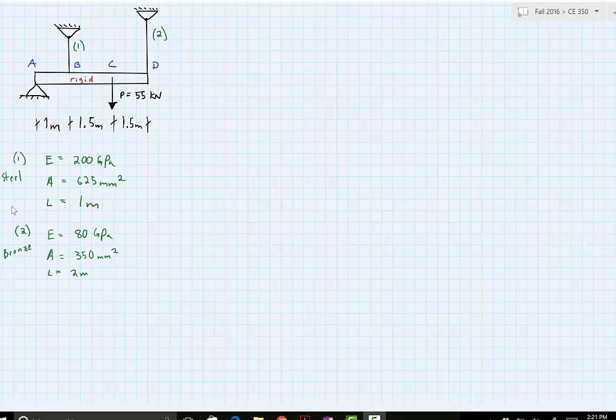So the problem statement asks to find the forces in cables 1 and 2 and then find the deflections at point A, B, C, and D.